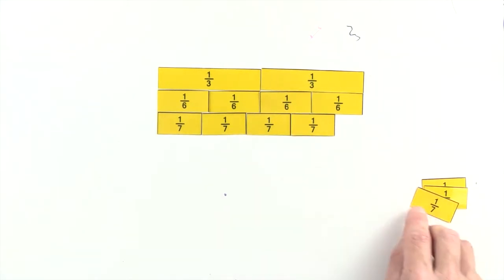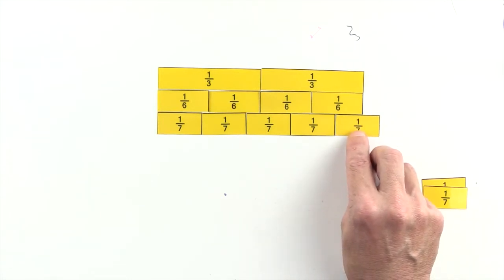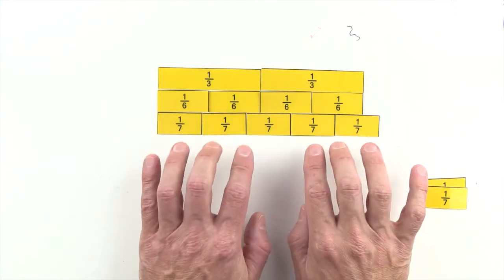5 sevenths are greater than 2 thirds. So we can't use sevenths to make an equivalent fraction to 2 thirds.